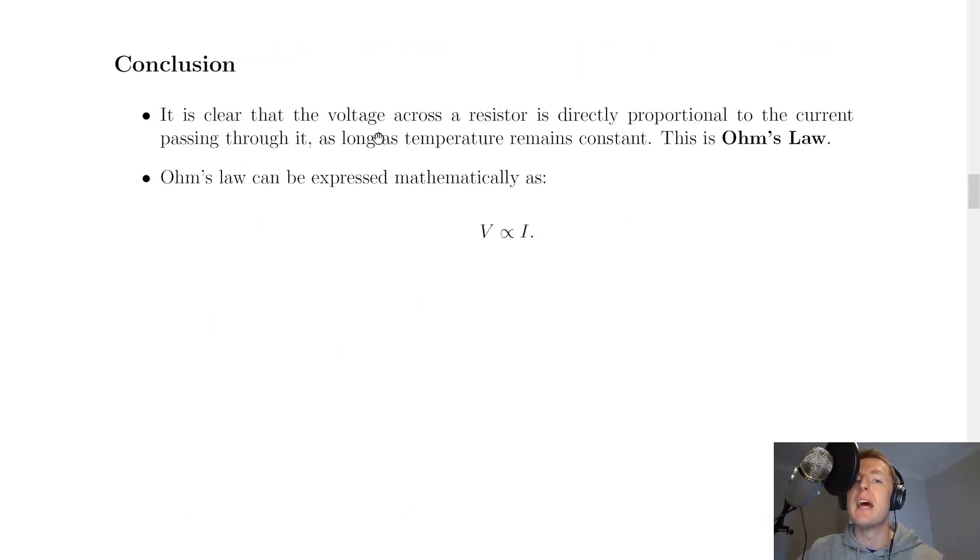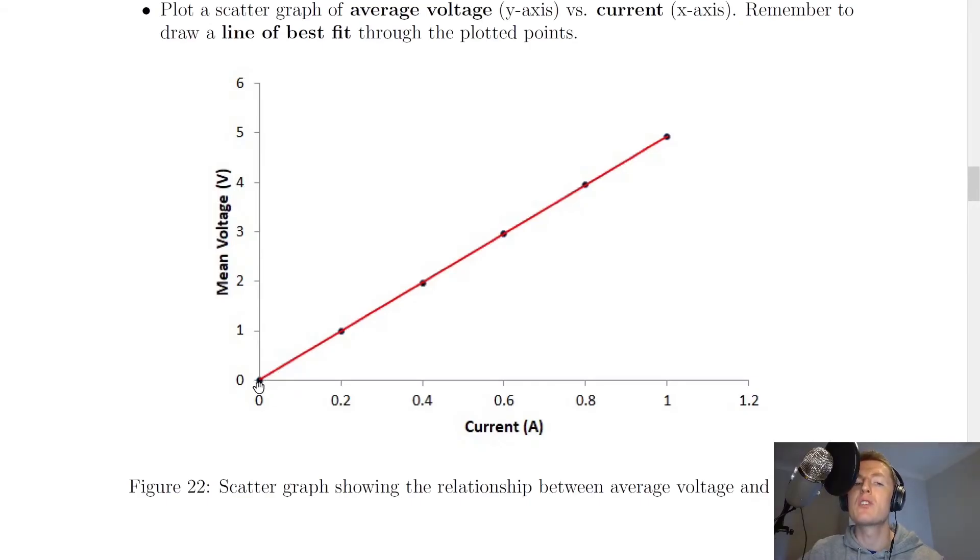Our conclusion then from this experiment is that the voltage across the resistor is directly proportional to the current passing through it, as long as temperature remains constant. And this is actually Ohm's law. So what do I mean by directly proportional? Well, whenever we have a graph that is going straight through the origin like this, then that is called directly proportional. This means that as one thing goes up, the other thing goes up. So as our current increases, our mean voltage or average voltage increases as well. It would also mean the opposite. So as current goes down, you'll see that the mean voltage goes down as well. So whatever happens to the current happens to the voltage. And that's what we're saying is this directly proportional relationship.